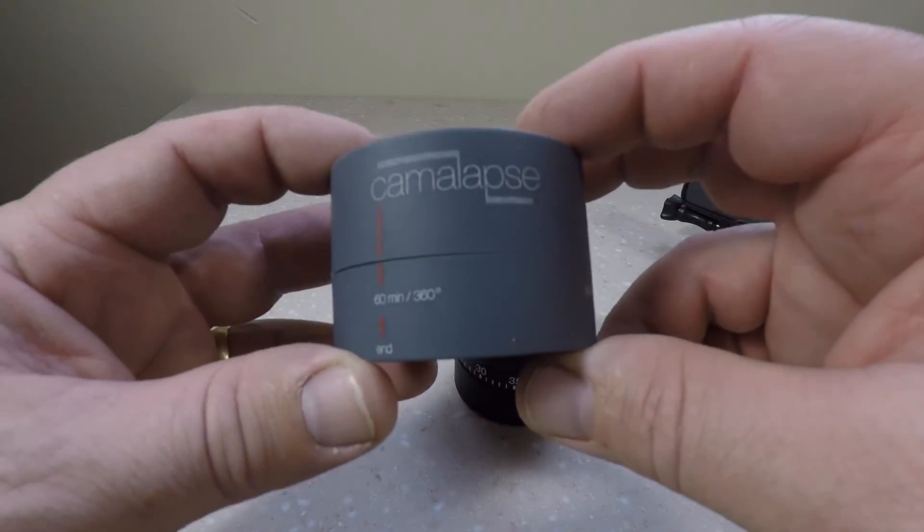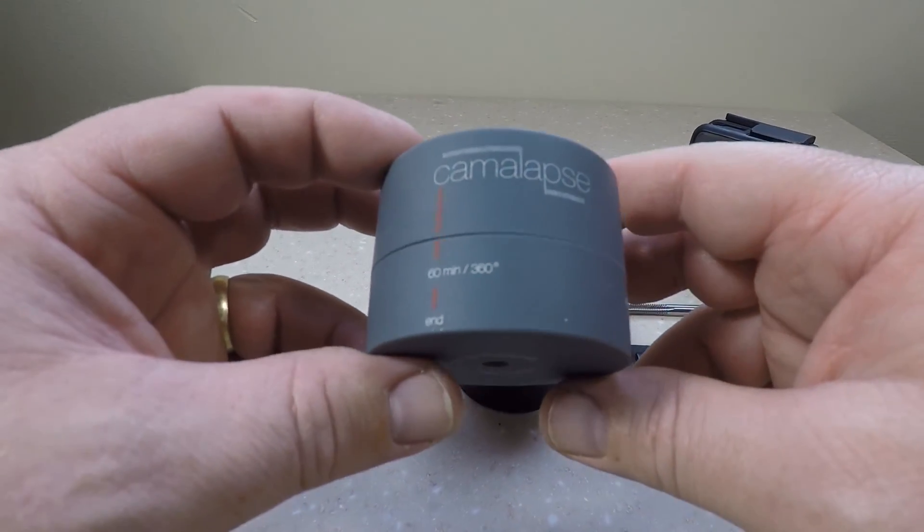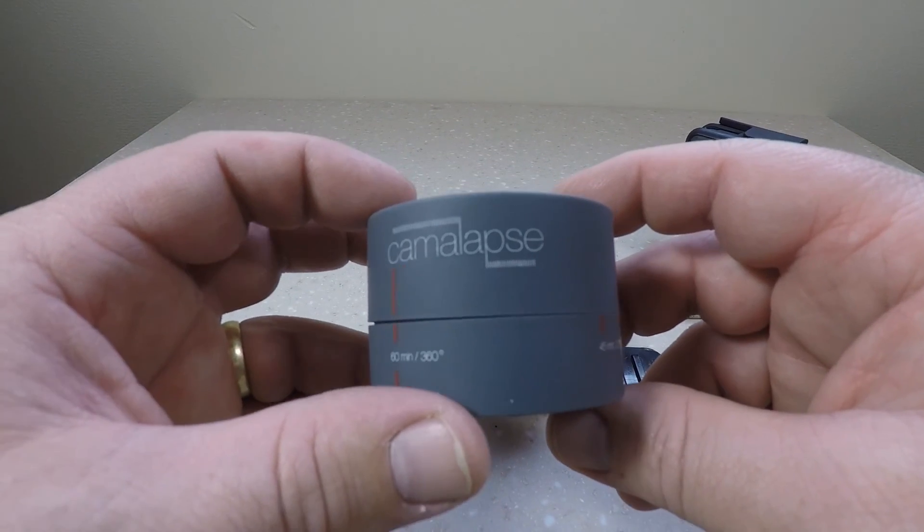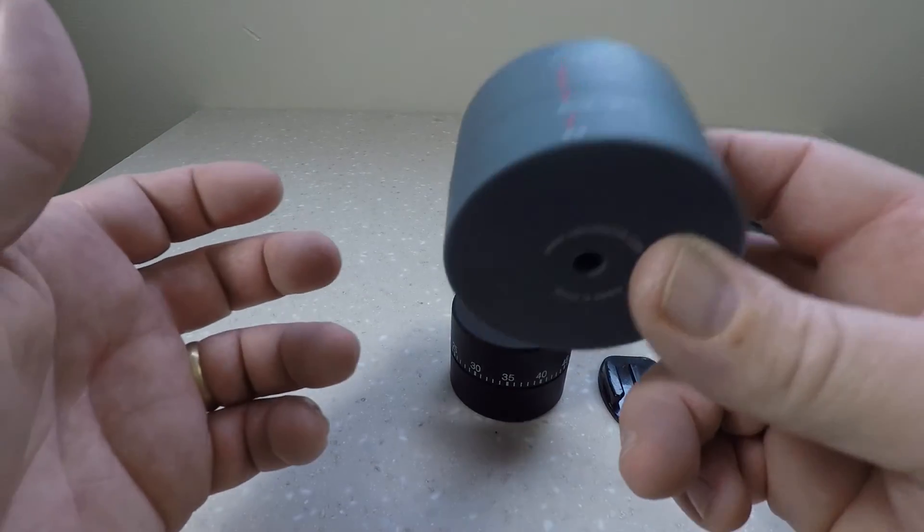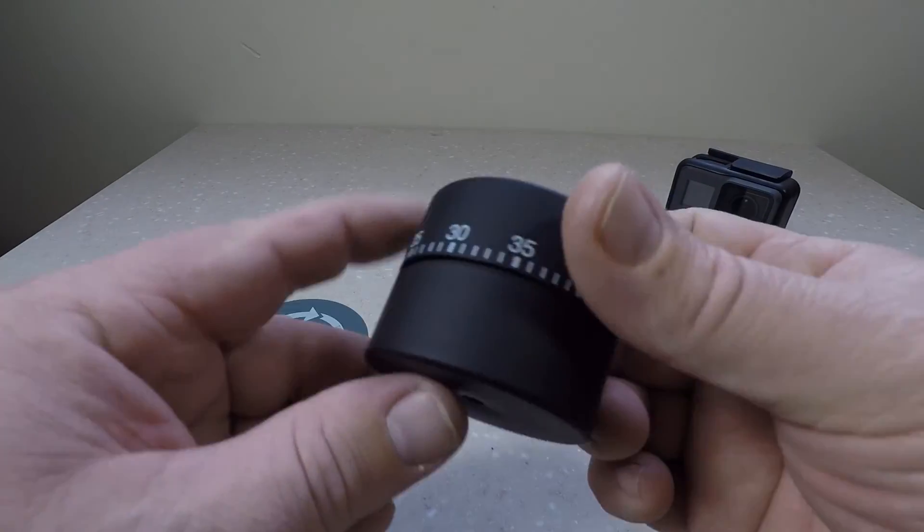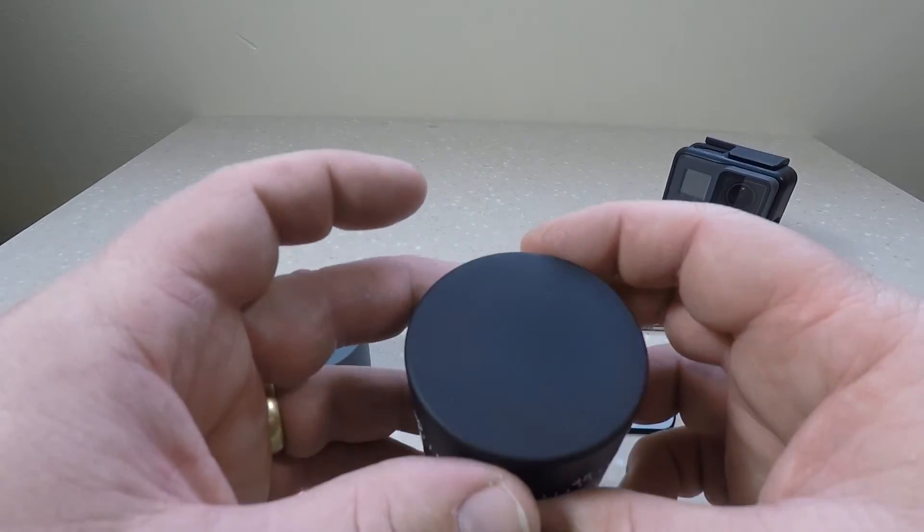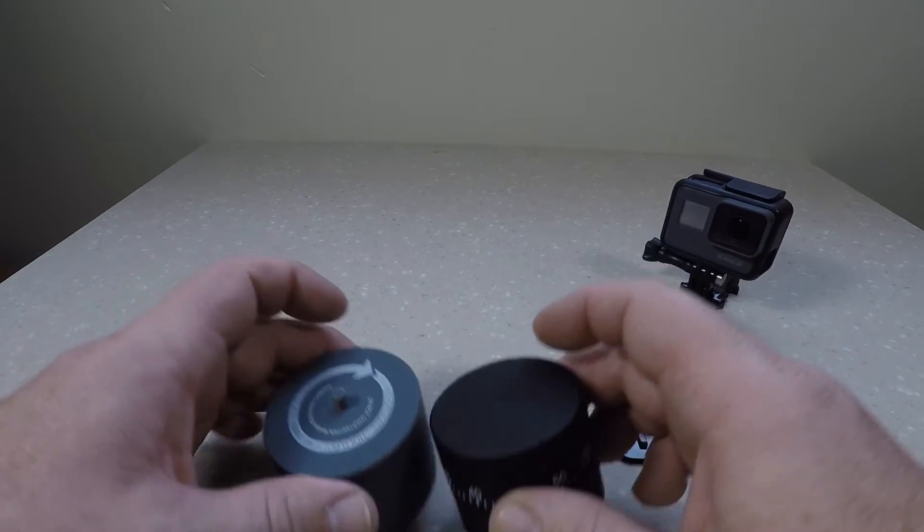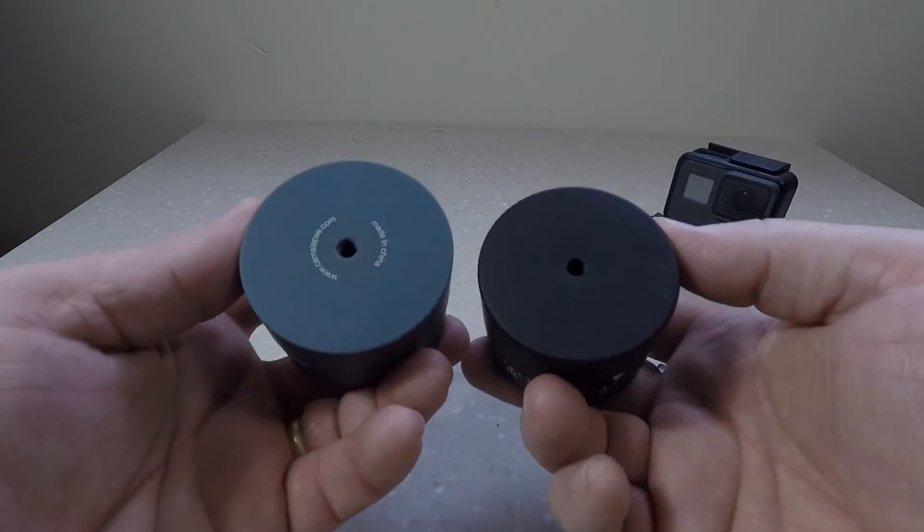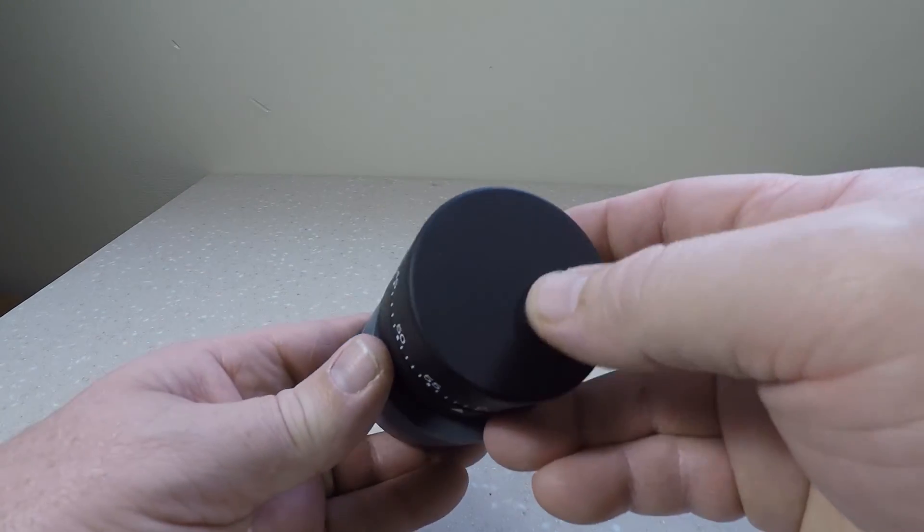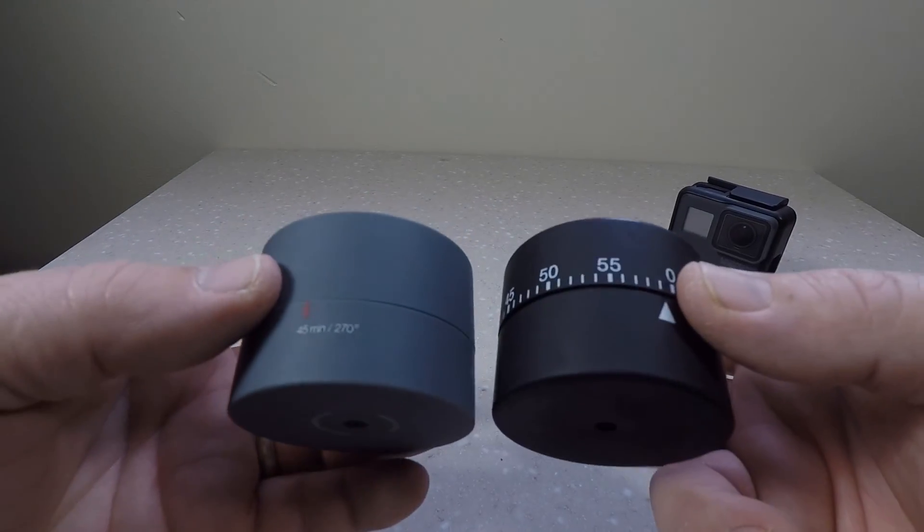Alright, we're going to make one of these. It's a Camelapse 1 hour 360 degree camera rotator. They retail for around $29.99. They are pretty nice, but you can get one of these. I got this one at Walmart for $2.99. It's a killer price. It's basically the same thing. It's slightly taller, but really, they're pretty much the same thing.